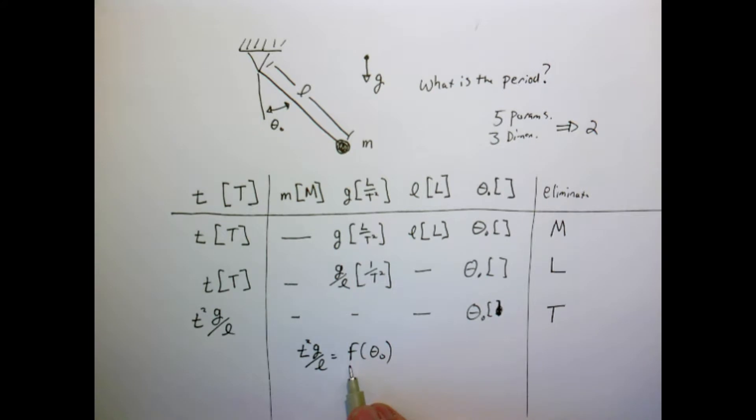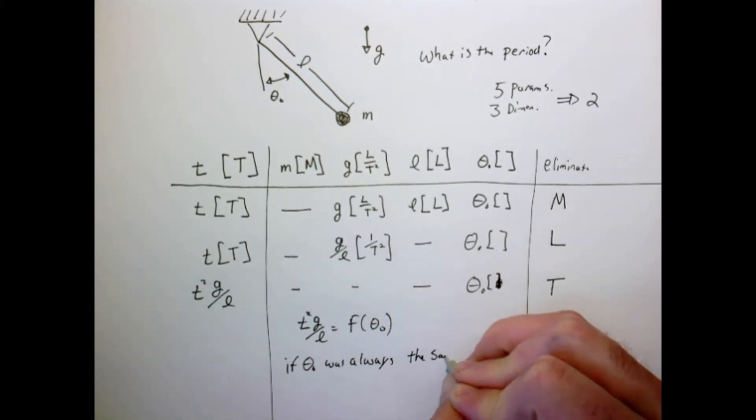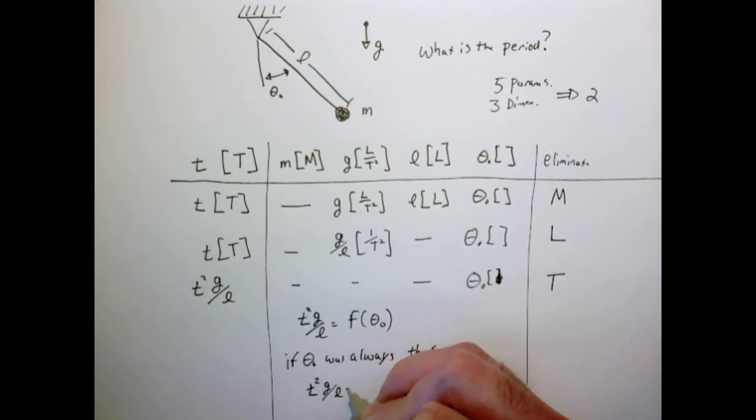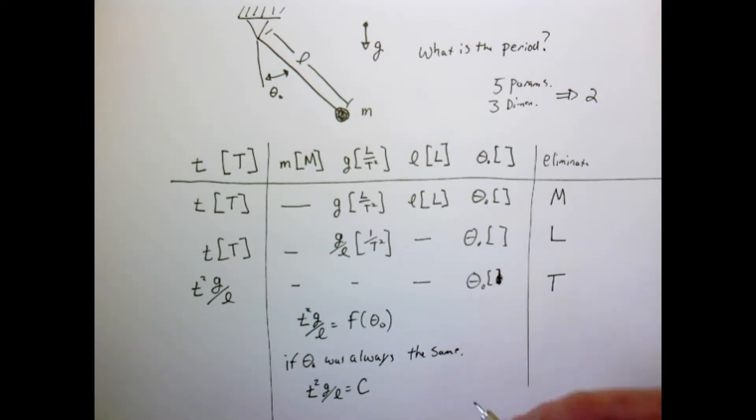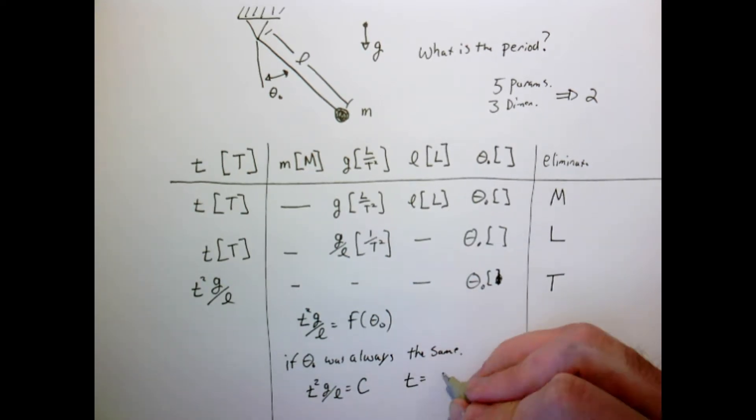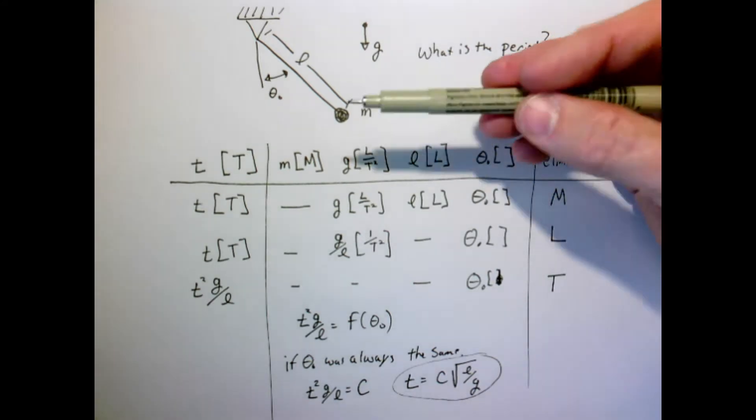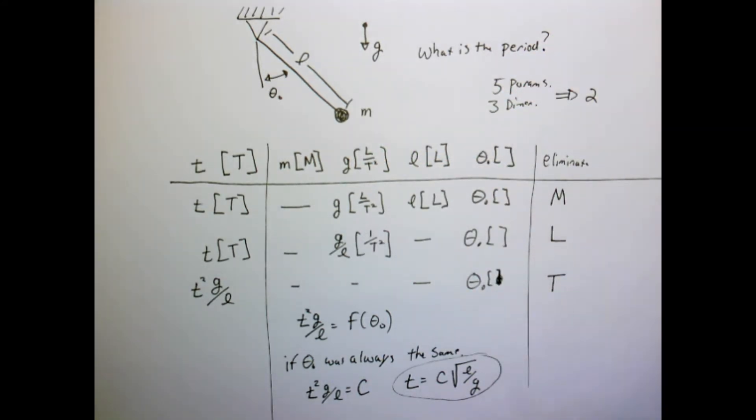So that tells me there's two dimensionless parameters, this and this. Now the analysis doesn't tell us what this function is. That has to come from experiment or some other analysis, but it tells us that these two things are related. If the initial angle was always the same, so I always pulled it back, say, to like 45 degrees, then that would tell me that T squared g over l is a constant. We don't know what this constant is from our dimensional analysis, but we know it would just be a constant. Or we could write that as T is some constant equal to the square root of l over g. So a result you might seem familiar. And we came about this result here that things ought to vary as l over g, simply by considering the units of the problem and eliminating things through this table.